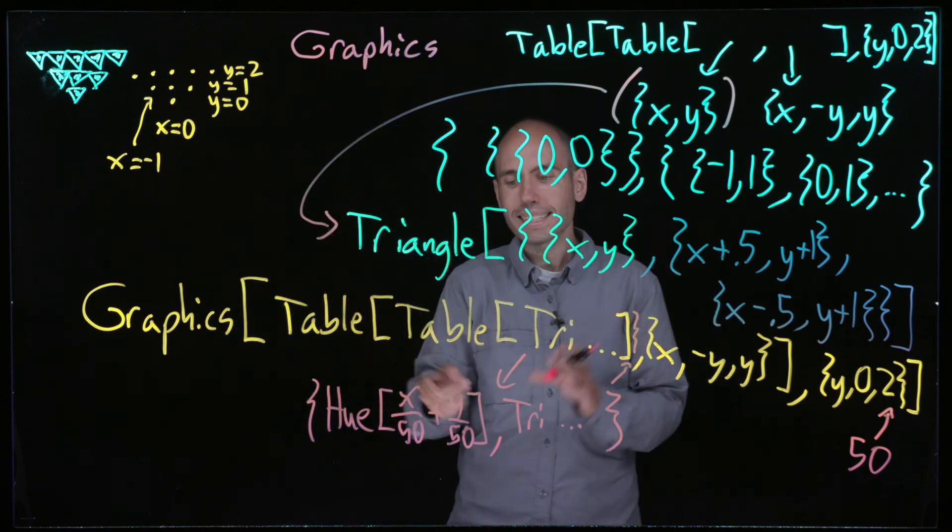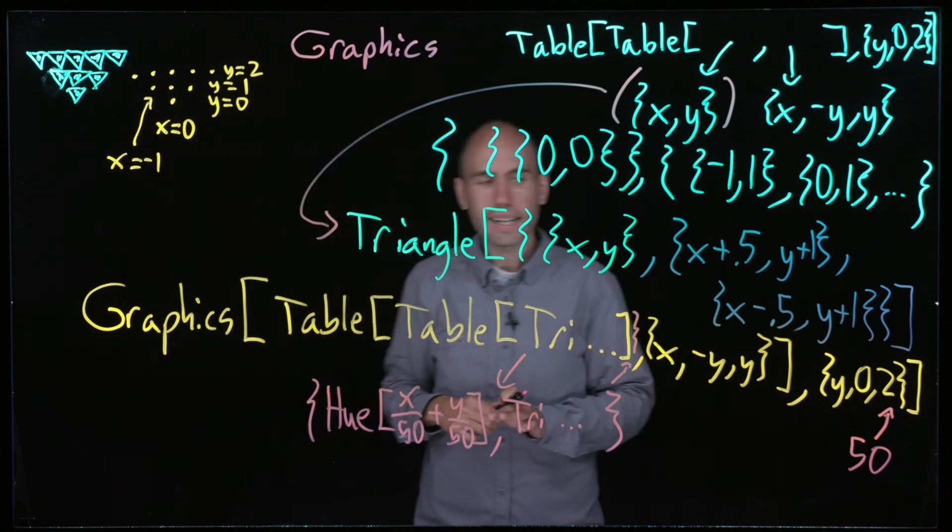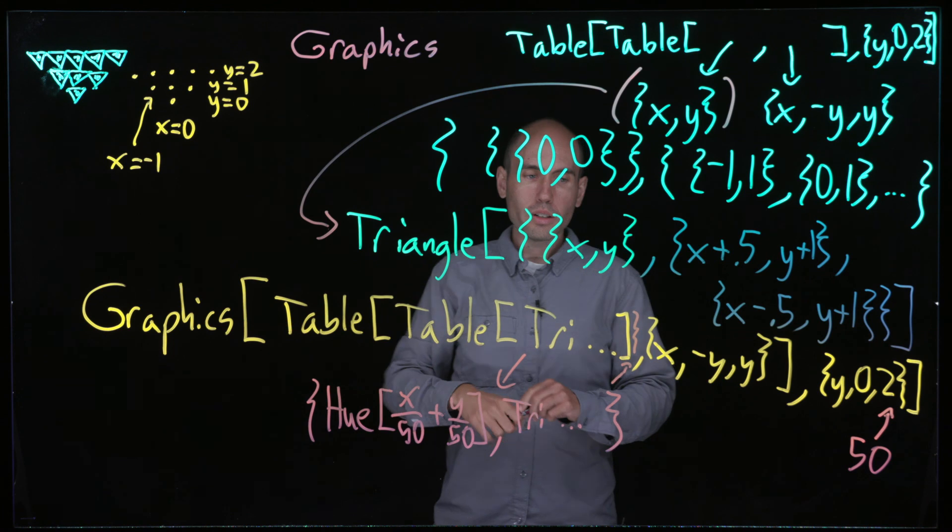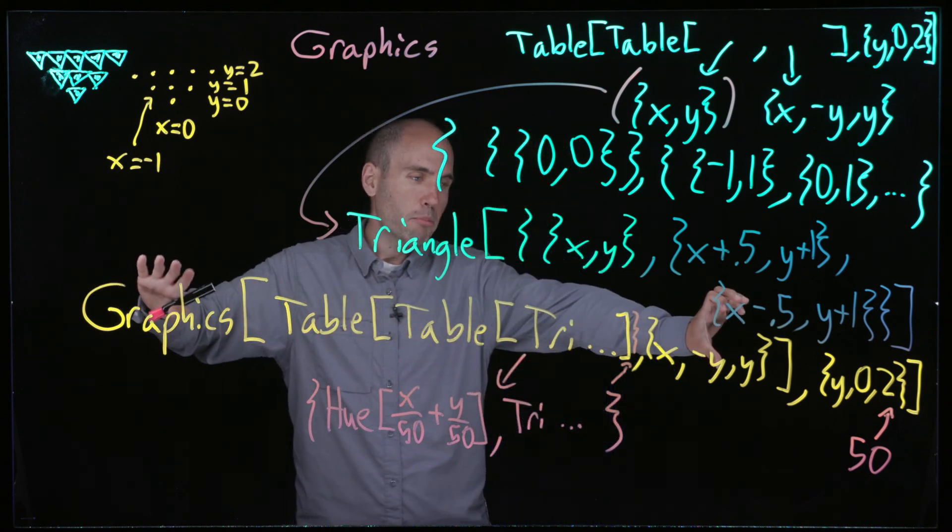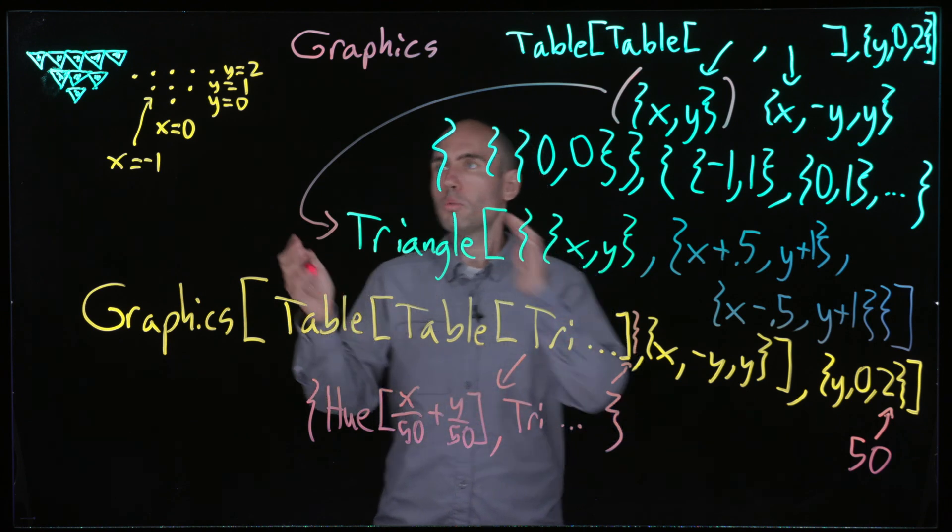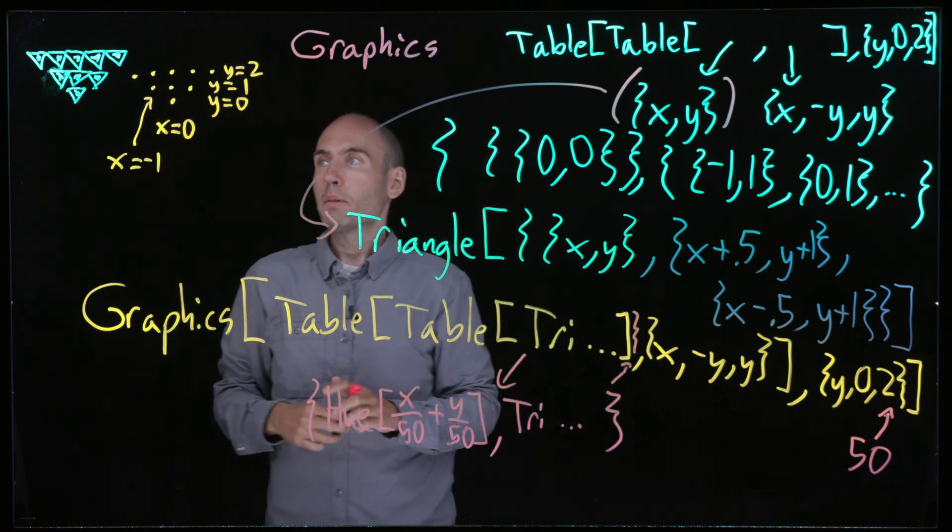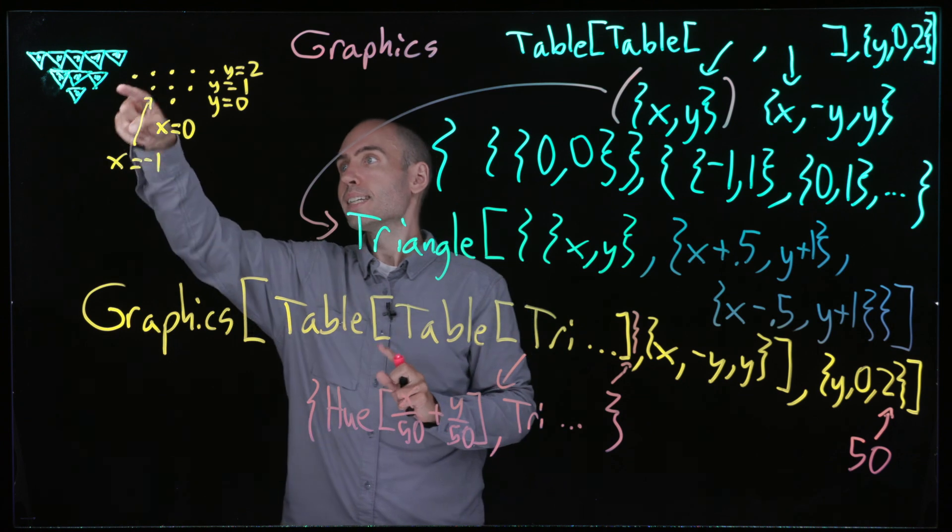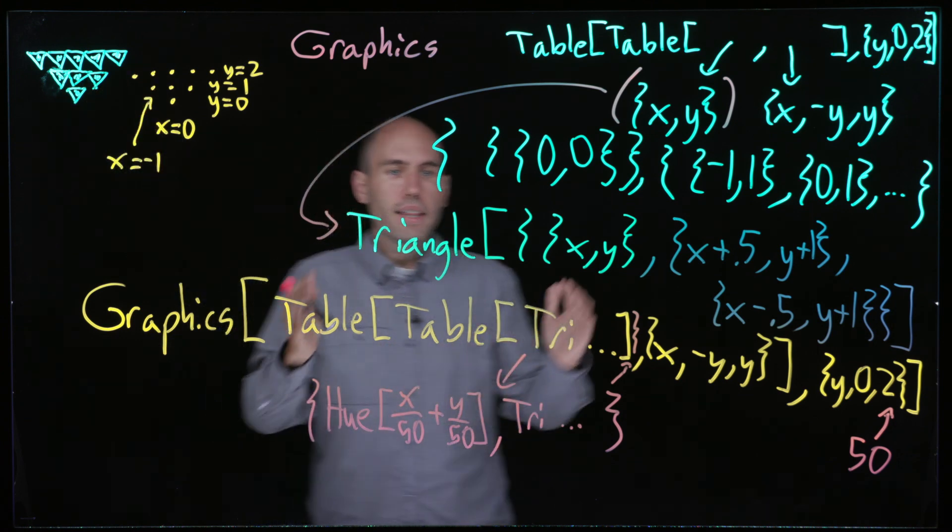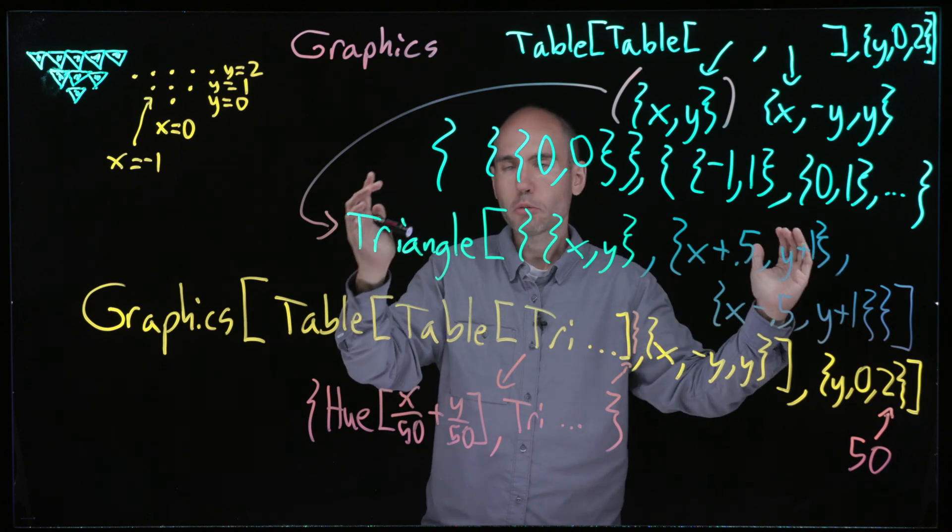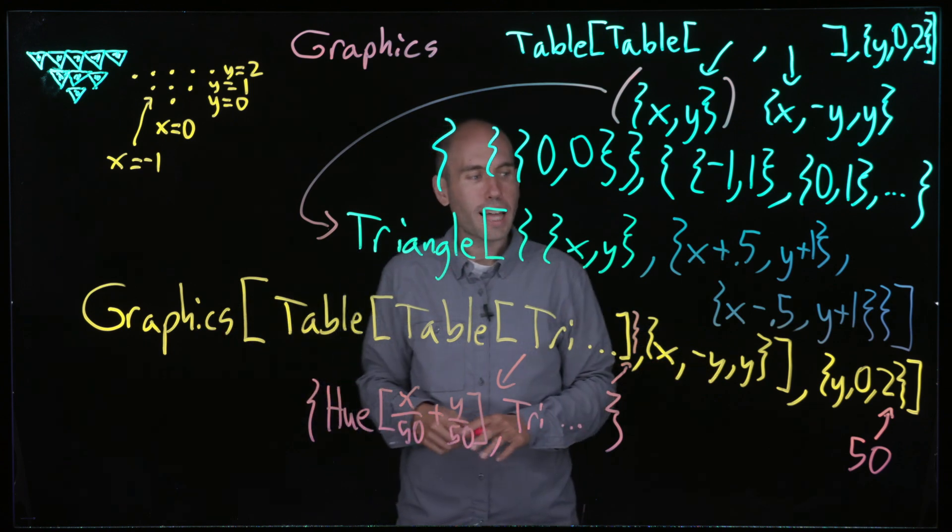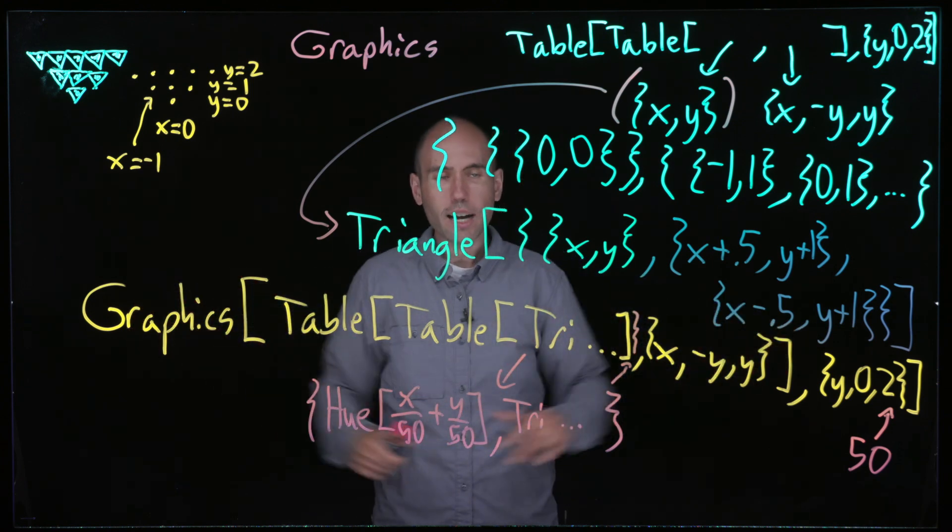So what was the main overall goal of this? The goal certainly isn't to memorize some complicated expression like this. The goal was to give this idea of break up the problem into bite-sized pieces. First figure out how to produce these vertices, then figure out how to produce a single triangle, and then put it all together in this eventual line of code that I have written down here.